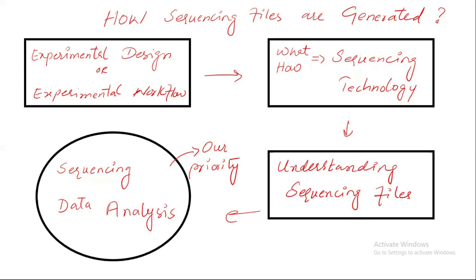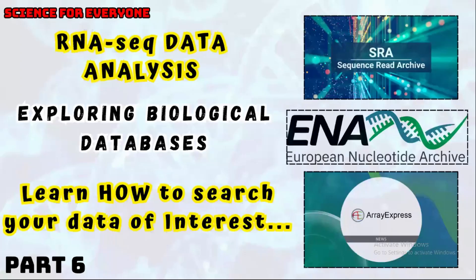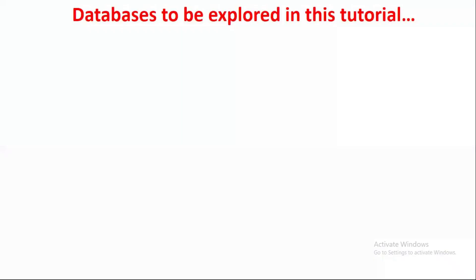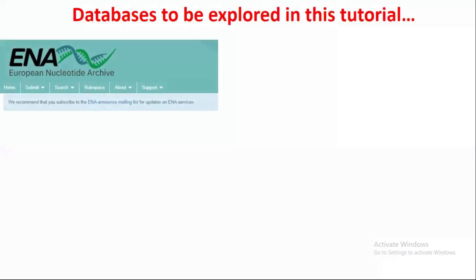Now I'm going to proceed with the data analysis, but first we should know how to get or choose your data of interest. For that, there are multiple databases where sequencing files are stored and you can retrieve them easily. In this tutorial, I will discuss the European Nucleotide Archive (ENA) database, where sequencing files are present, and show you how to explore it and choose your data of interest.